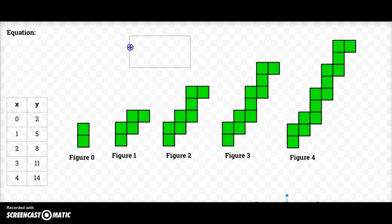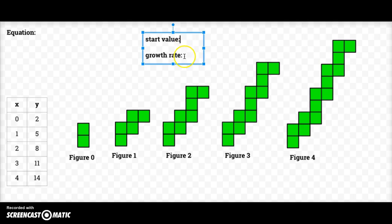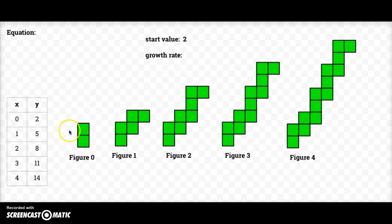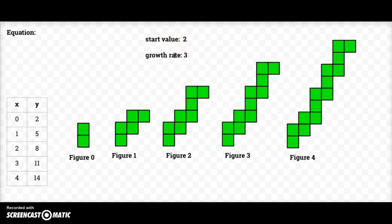Now I need to identify a couple of key things here. I need to identify what I started with and I need to figure out what I'm growing by. To find the start value, I need to look at my figure zero — when x is zero, what is my y value? That's going to be my start value. So in this visual pattern my start value is two, because that is the number of tiles in figure zero, or when x is zero my y value is two. My growth rate is what I'm doing every time to the pattern — I'm adding three. So I've got a start value of two and a growth rate of three, and now I have enough information to write my equation.